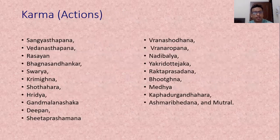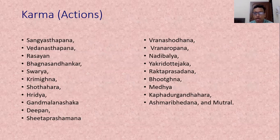The main actions of Gugul are Sanghyasthapan, Vyadhanasthapan, Rasayan, Vajnasandhanakar — meaning it helps in bone union — then Swarya, Krimighna, Shothahar, Hridya, Gandhavalanasak, Deepan, Shitaprasaman, Vrana Shodhan and Vrana Ropan, Nadivakyakar, Yakrit Uttejak, Raktaprasadhan, Bhutagna, Vedya, Ashmari Bhedan and Mutral.